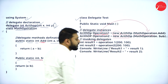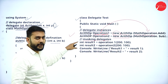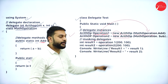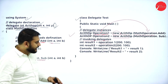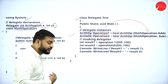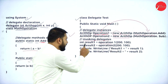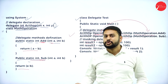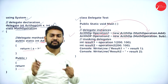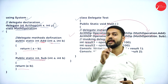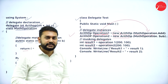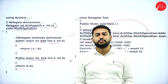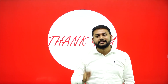Now invoking the delegate: I use the instance 'operation1' and pass the values 200 and 100 — 200 goes to a and 100 goes to b. The value is returned from the method and comes to result1, and similarly result2 gets the subtraction result. Finally I print them using print statements. This is how declaration, definition, instantiation, and invoking of a delegate happens. I think this is pretty simple. If you liked it, don't forget to click the like button. Stay tuned for the next topic on delegates. Till then, take care, bye bye.